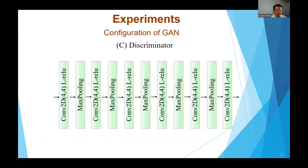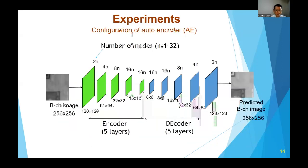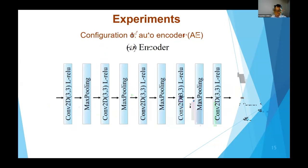This figure shows the configuration of the autoencoder used for comparison. A three-by-three kernel was used, with ReLU as an activation function.